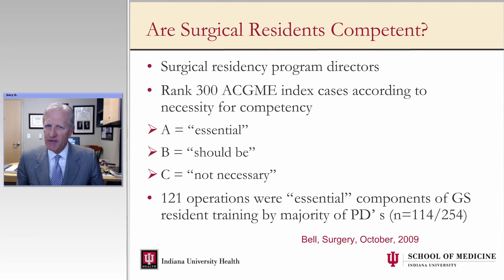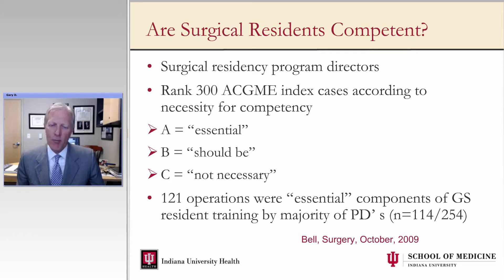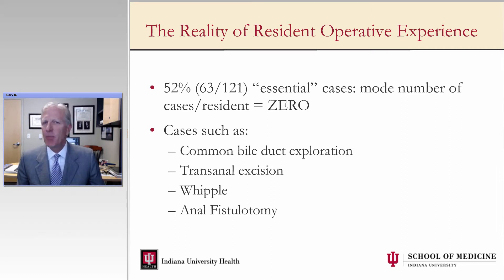One question frequently asked of me as a surgical educator is: are surgical residents competent currently? There have been all the changes with regard to work hours restrictions and a very different environment for training, with an increase in technological demand. Recently in general surgery, 300 ACGME index cases were ranked by program directors according to competency: A were essential — cases that must be performed well by residents completing training; B as they should be; and C were not necessarily. 121 operations were deemed essential components of general surgery training by a majority of program directors. Surprisingly, over half of those essential cases had a mode number of zero in the American Board of Surgery case profiles — cases such as common bile duct exploration, transanal excision, and Whipple — procedures that most residents should be capable of doing once in practice.